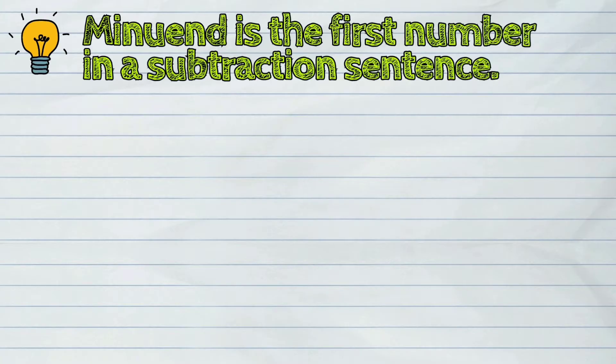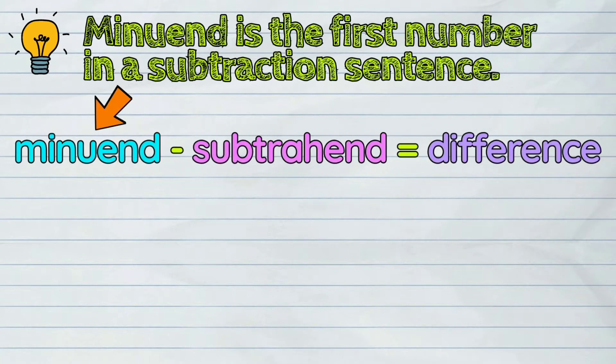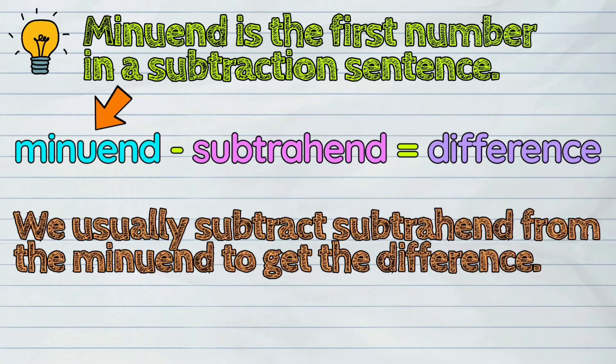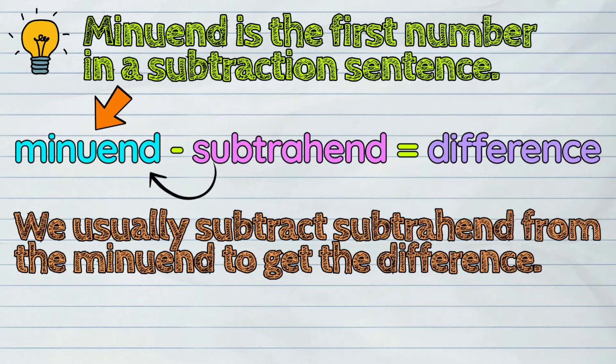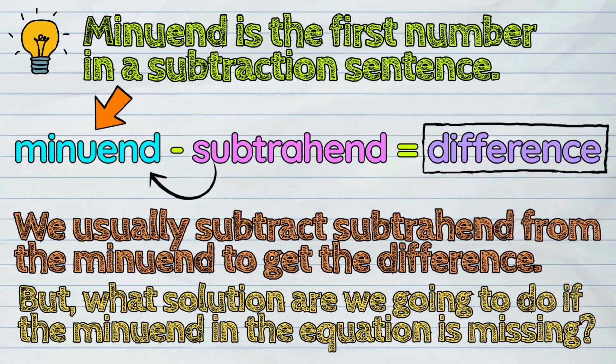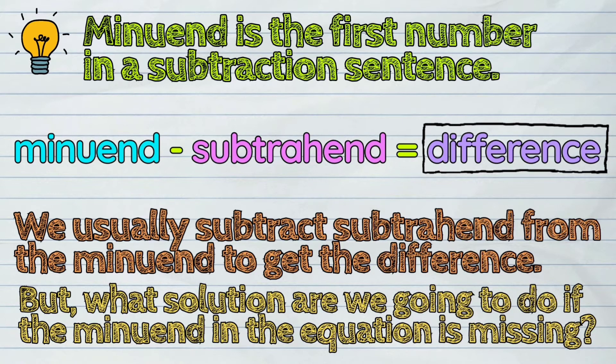Minuend is the first number in a subtraction sentence. We usually subtract subtrahend from the minuend to get the difference. But what solution are we going to do if the minuend in the equation is missing?